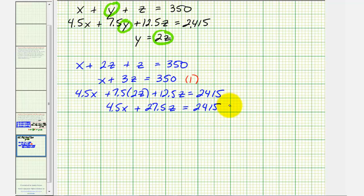This is our second equation that again only contains two variables, x and z. Now we'll solve equations 1 and 2 as a system of two equations with two unknowns. Let's rewrite them: x plus 3z equals 350, and 4.5x plus 27.5z equals 2415.